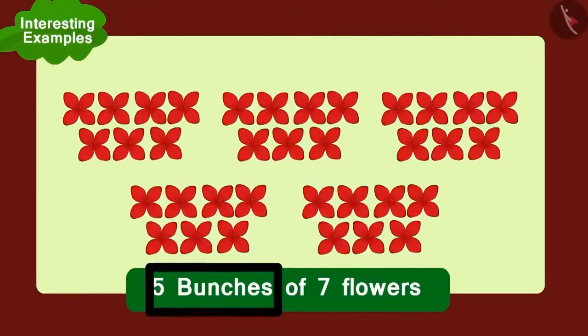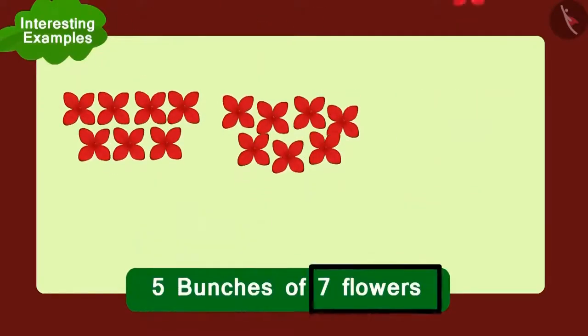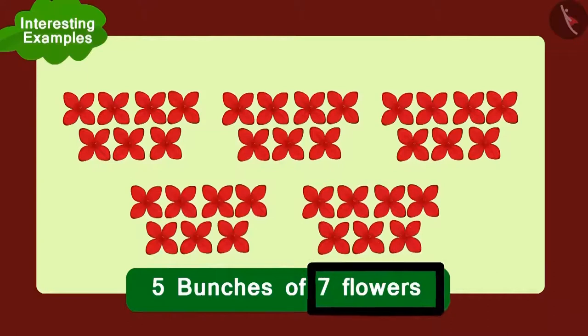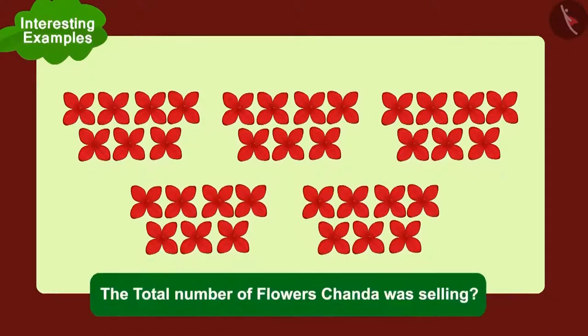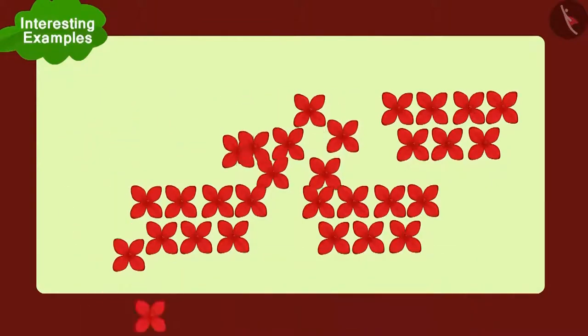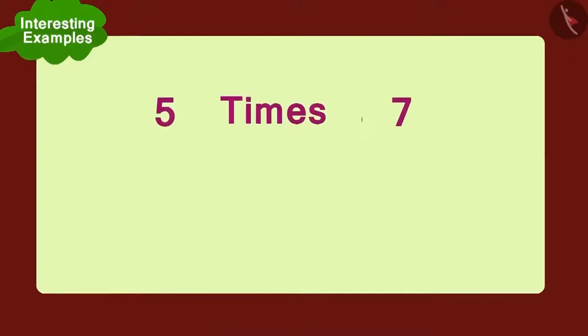At the same time, Chanda was selling five bunches of seven flowers each. Children, can you tell the total number of flowers Chanda was selling? Five times seven, or five multiplied with seven. We can write it like this.